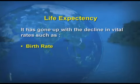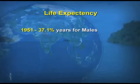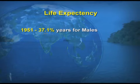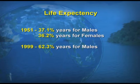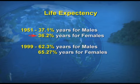Life expectancy has gone up with the decline in vital rates such as birth rate and fertility. Life expectancy refers to the average number of years a person survives. In 1951, life expectancy for males was 37.1 years and for females was 36.2 years. By 1999, this increased to 62.3 years for males and 65.27 years for females, showing significant improvement.